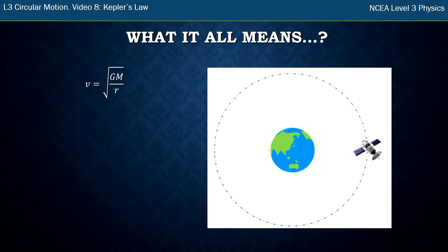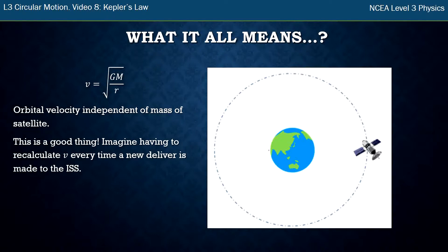So what does it all mean? We found that the orbital velocity is independent of the mass of the satellite. That's important because it means when you get a new person visiting the International Space Station or a new delivery of food, which changes the mass of the station, the velocity doesn't need to change.